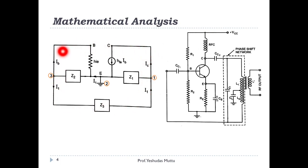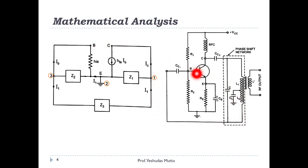This is the generalized circuit or block diagram of an LC oscillator, and this is the Hartley oscillator. Z1 is connected to the collector — similarly L1 is connected to the collector. Z2 is connected to the base — so L2 is connected to the base. Z3 is connected between collector and base — so capacitor C is connected between collector and base. Therefore Z1 = L1, Z2 = L2, and Z3 = C.